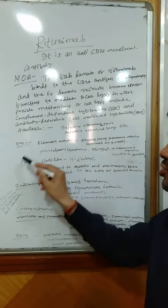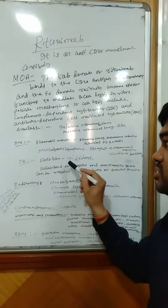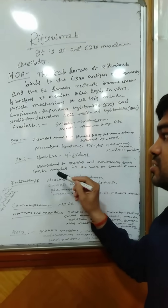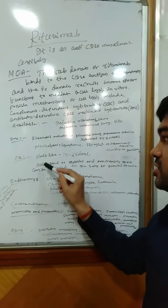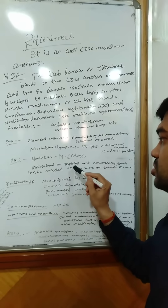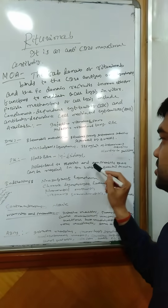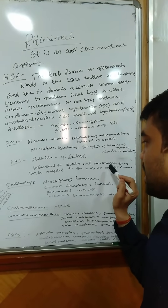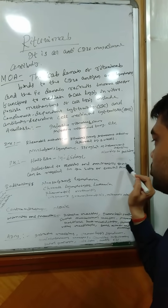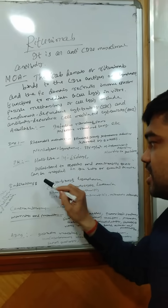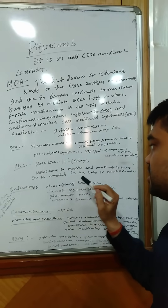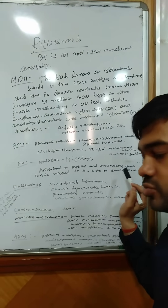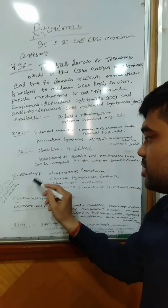Coming to the pharmacokinetics, the half-life is 14 to 62 days and it is metabolized to peptides and amino acids that can be recycled in the body or excreted in urine.